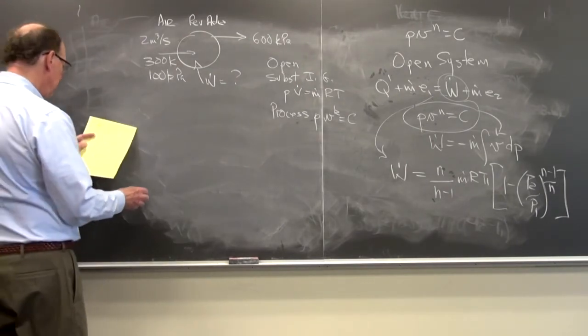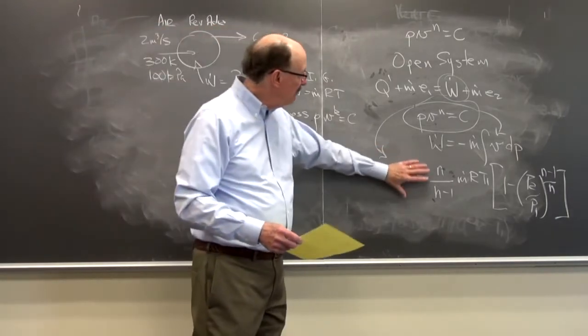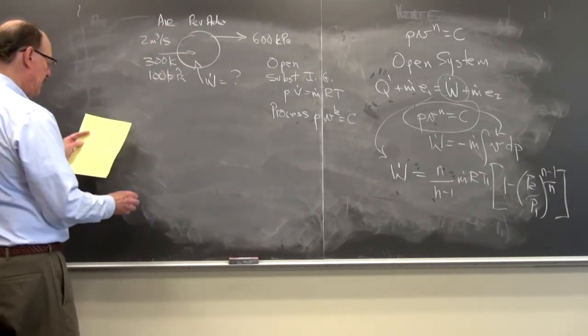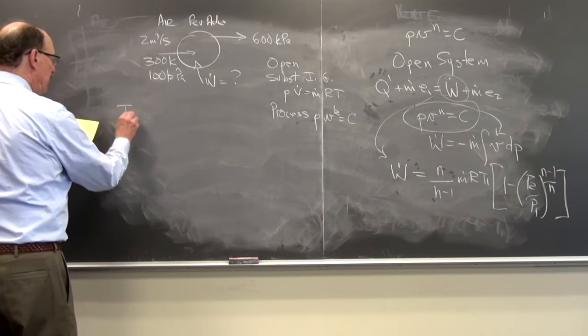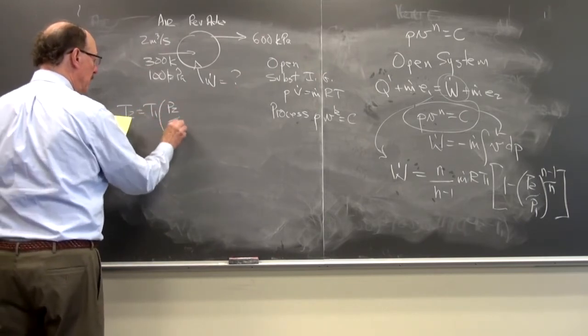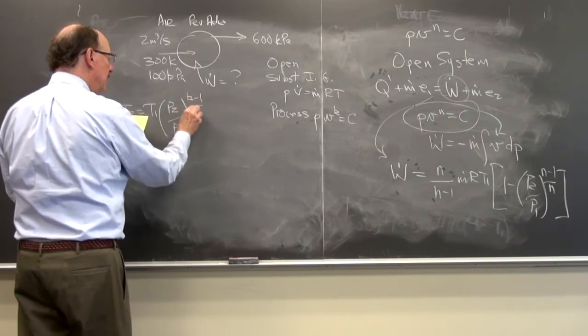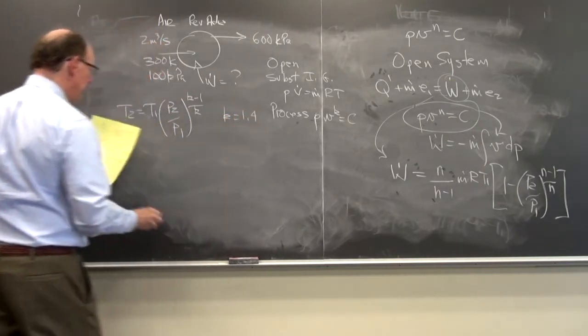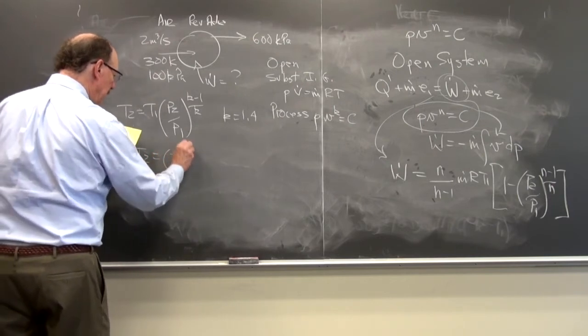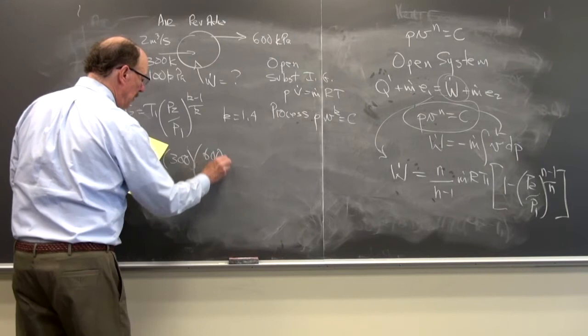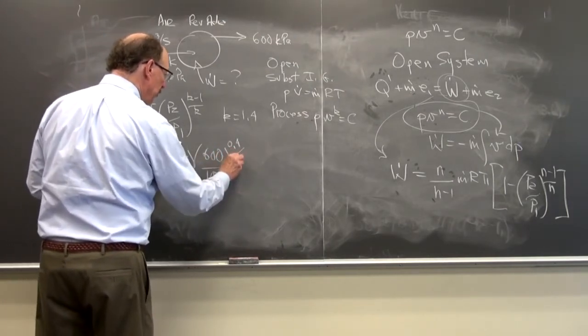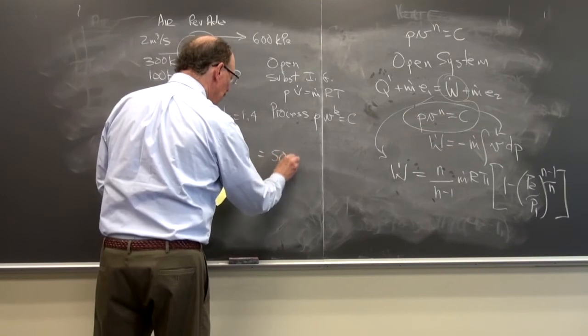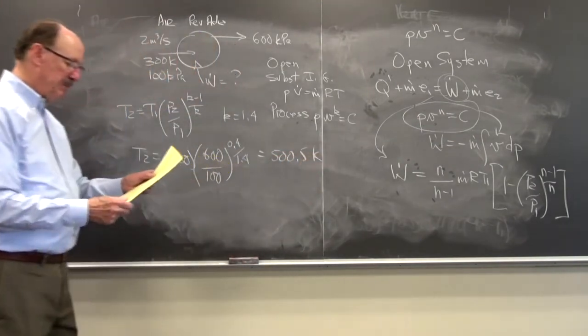So when I look at this equation I want to apply and find the power this way. So part of what I want to be able to do is to do that. I'm also curious in the exit temperature. So T2 is equal to T1 times P2 over P1 to the K minus 1 over K. Same equation except I substituted in that. And K is equal to 1.4. So if I do this, T2 is equal to 300 times 600 over 100 to the 0.4 over 1.4. So this is equal to 500.5 degrees K. So that gives me my exit temperature.